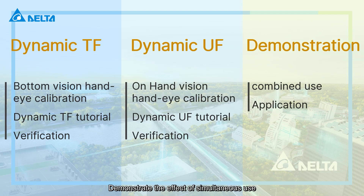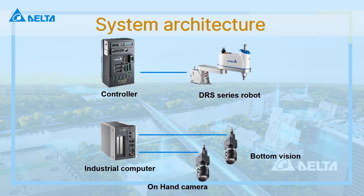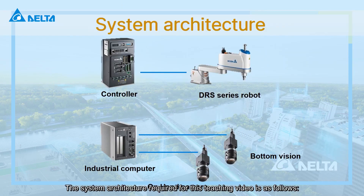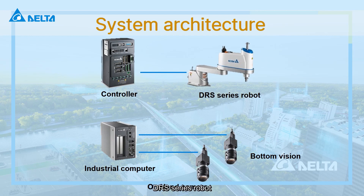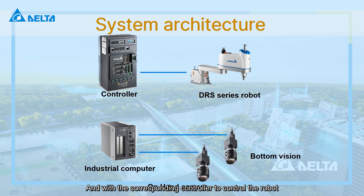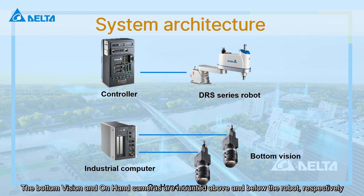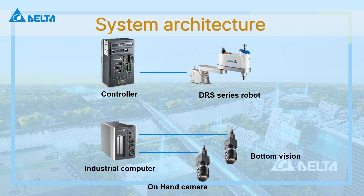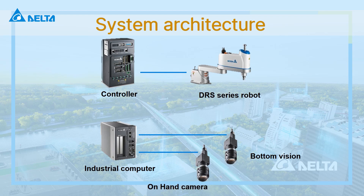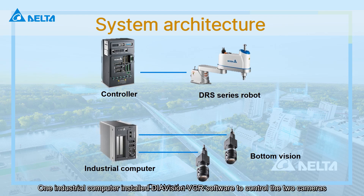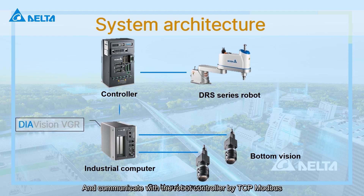Finally, we will combine the two functions and demonstrate the effect of simultaneous use. The system architecture required for this teaching video is as follows: a DRS series robot with the corresponding controller to control the robot. The bottom vision and on-hand cameras are mounted above and below the robot respectively to identify the patterns of TF and UF. One industrial computer has DIA Vision VGR software installed to control the two cameras and communicate with the robot controller via TCP Modbus.